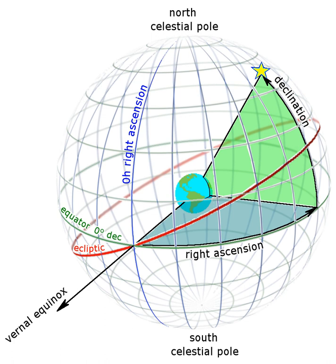Effects of precession: The Earth's axis rotates slowly westward about the poles of the ecliptic, completing one circuit in about 26,000 years. This effect, known as precession, causes the coordinates of stationary celestial objects to change continuously, if rather slowly.